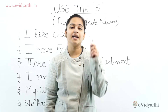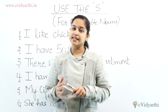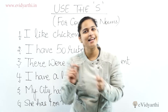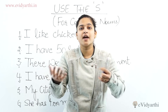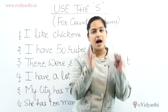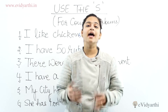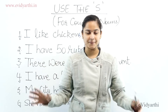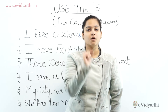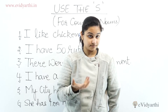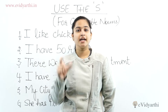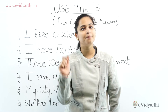एक और example देखिए — 'I like dog' इसका मतलब है मुझे dog खाना पसंद है। लेकिन 'I like dogs' इसका मतलब है I am fond of having dogs in my house, I love playing with dogs। इसी तरह 'I like cat' मतलब cat खाना पसंद है, लेकिन 'I like cats' मतलब आपको cats अच्छी लगती हैं। Cat, dog, chicken — ये countable nouns हैं।